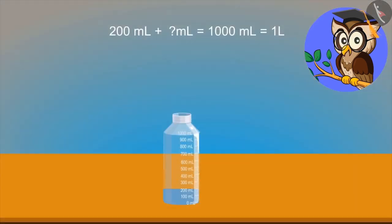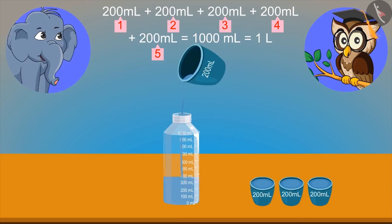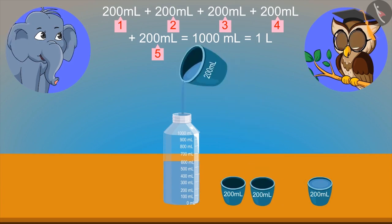Now answer one more question of mine. This bottle contains 200 ml of water. How many times 200 ml bottles should be added to give 1000 ml of water? I know that adding 200 ml for 5 times gives 1000 ml or 1 litre.